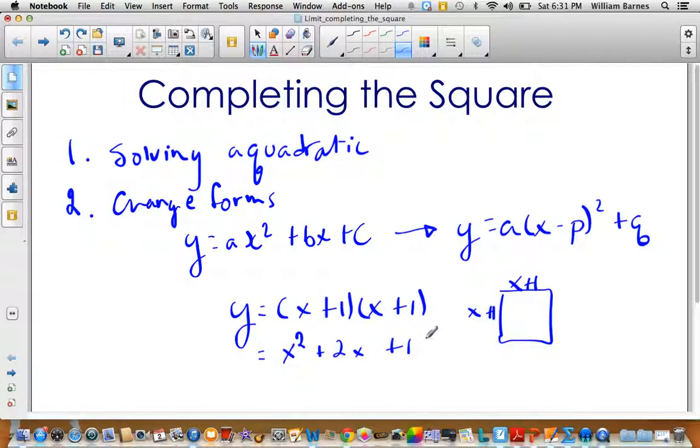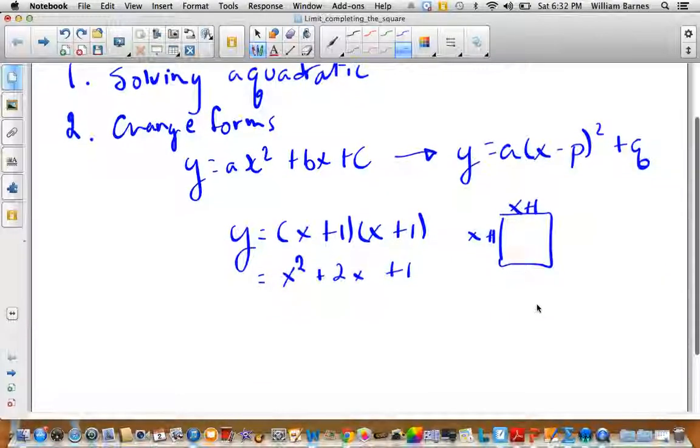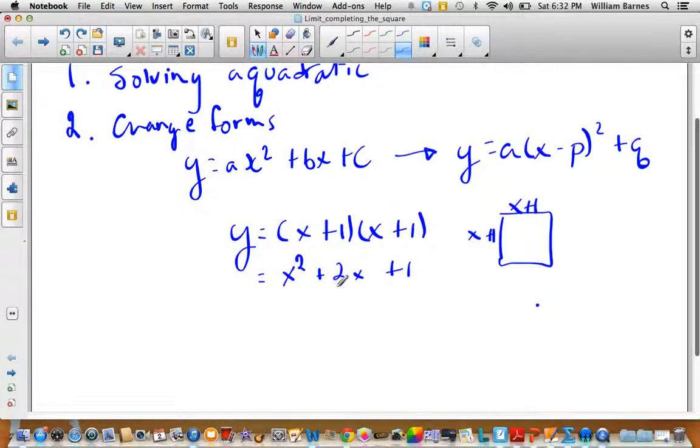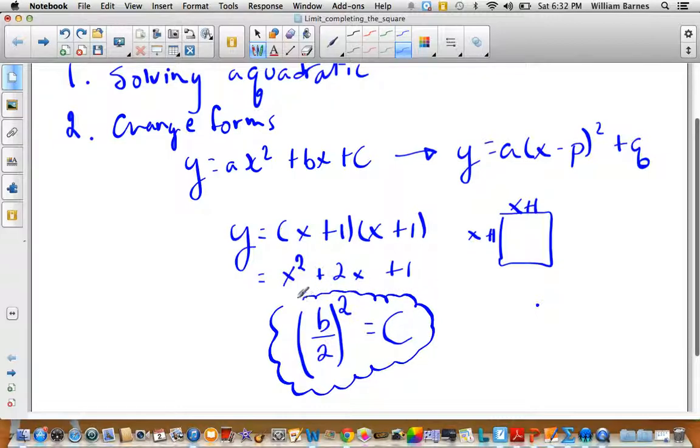If this was in standard form, it would look like x squared plus 2x plus 1. The formula I use is a property of perfect square trinomials, which is that if we divide the b term, the one next to the x, by 2, and then square it, we get the c term. So we go b divided by 2, and then we square it, we get c. You can try it with this one, 2 divided by 2 is 1 squared. 1 squared is just 1, so it works. This is a really important formula for completing the square.